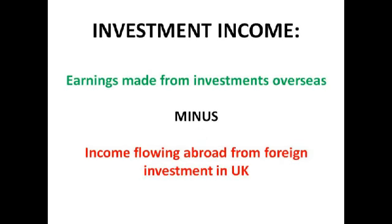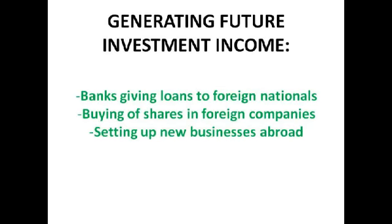Investment income is earnings made from investment abroad minus income flowing out to foreign investors in the UK. For example, if we invested in a French company that made profit, we get money back — maybe through shares — that is investment income. The reverse is when a French firm has invested in our company and we have to give money back to them. To generate future investment income, banks could give loans to foreign nationals, we could buy shares in foreign companies, or set up businesses abroad — essentially investing in another country's capital, labour and land, and getting returns back.